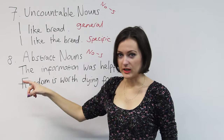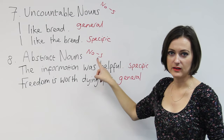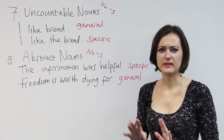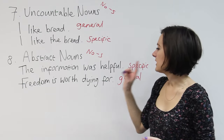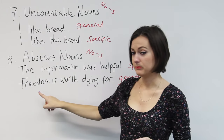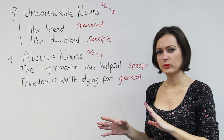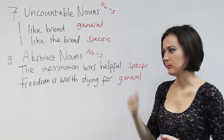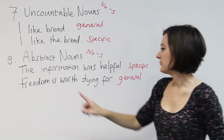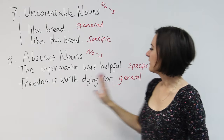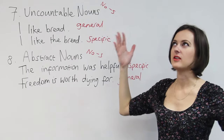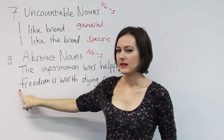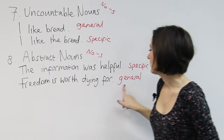Rule number eight is very similar: abstract nouns. Again, these don't take a plural. Abstract nouns represent concepts, not real things we can touch — they're ideas. For example, 'information' and 'freedom' are abstract nouns. When do we use an article? 'The information was helpful' — here we're being specific, maybe talking about something I'm holding in my hand. Whereas 'freedom is worth dying for' has no article because that's a general, grand statement about freedom. If we put abstract nouns at the beginning of sentences, usually we don't want an article there because we're talking in general.